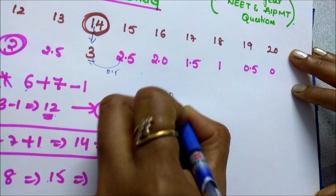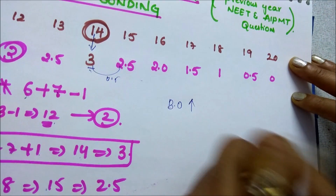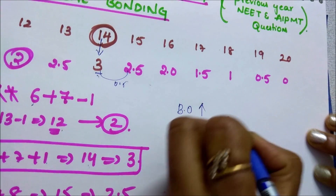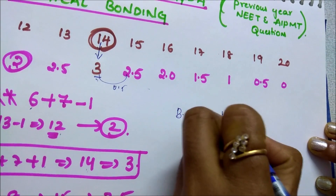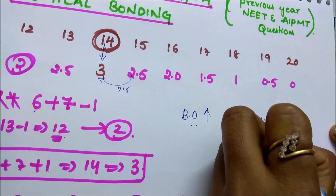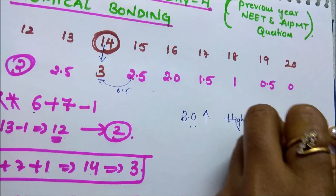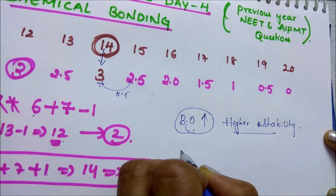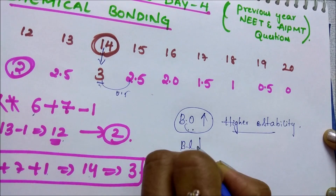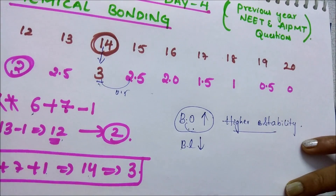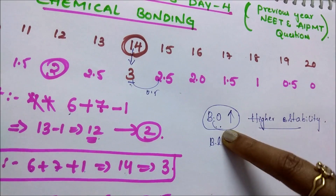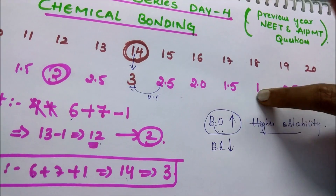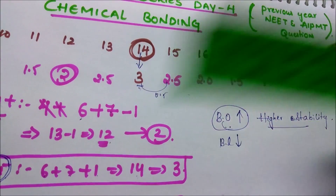One more important point: more bond order means more number of bonds. More bond order also means higher stability. Additionally, bond order and bond length are inversely related — more bond order means less bond length. They may ask anything involving these three relationships, so interrelate them to solve questions easily.